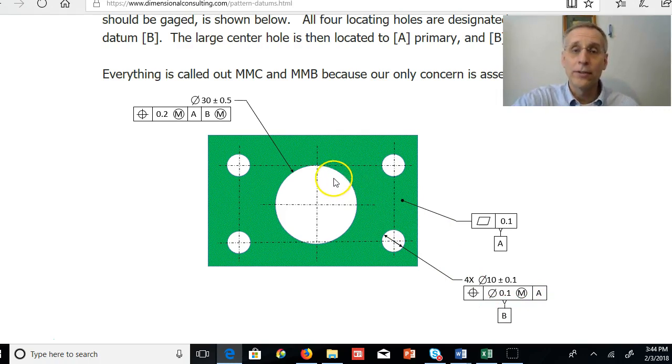And when we want to locate this hole relative to the four holes, we locate it with a tolerance of position, max material condition, to A primary, and then B, that max material boundary, secondary, and that's it. We're done.